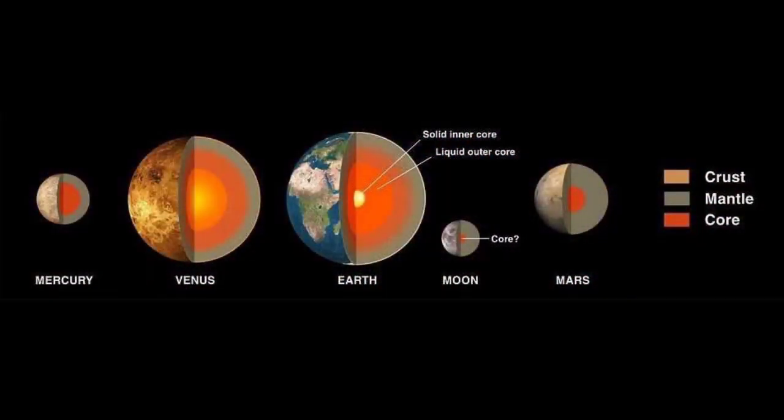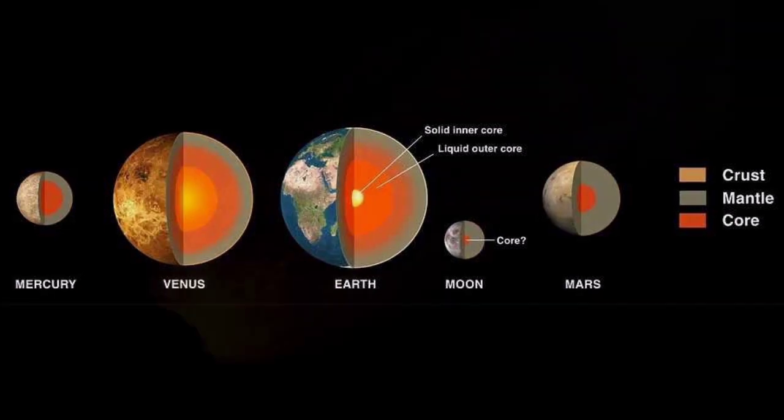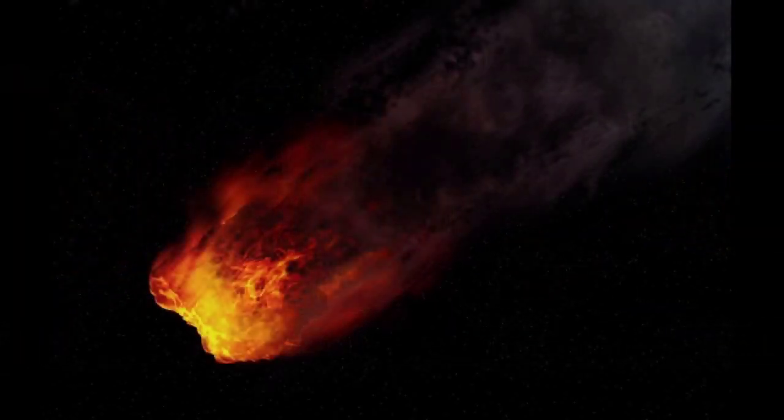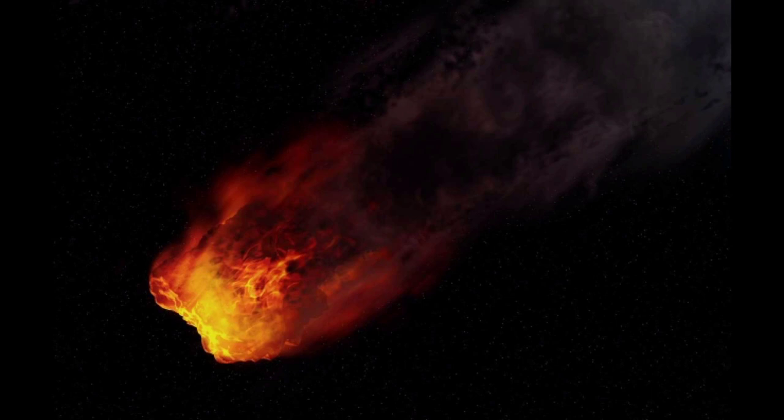Our planet's rapid spin and molten nickel-iron core gives rise to an extensive magnetic field that shields us from harmful radiation coming from the Sun and other stars. Earth's atmosphere protects us from meteors, most of which burn up before they can strike the surface.